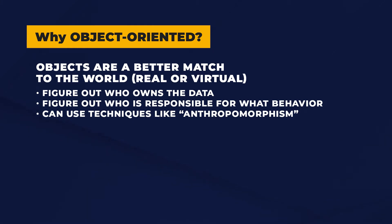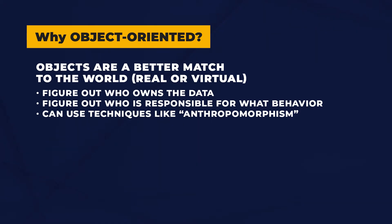But what if there are no real world objects? You can have a virtual world and imagine how it works and replicate that. So some of the things we want to figure out are who owns the data, who is responsible for what behavior. And you can use techniques like anthropomorphism, which is making all the objects people and figuring out what each person in this system or organization is responsible for — what information they're responsible for and what behavior they're responsible for. So it's much easier for us to think about.